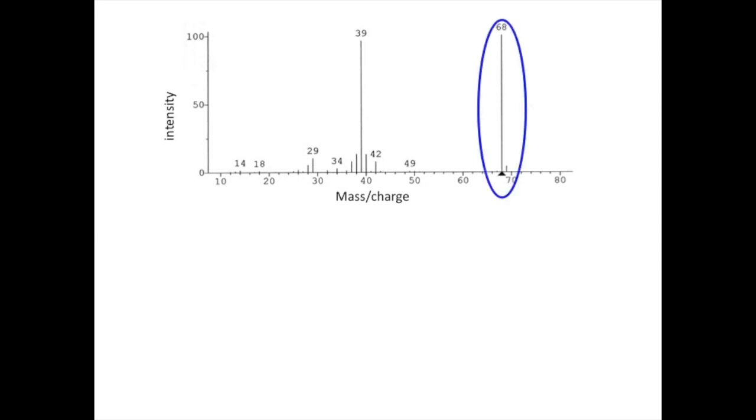Start by identifying the molecular ion. If it is present, it should be in the cluster of ions at the high mass end of the scale. Let's assume that the tallest peak in this cluster is the molecular ion. Note, that is not always the case. With the molecular ion at 68, the peak at 69 must be the M plus 1 ion. Let's use their intensities to calculate the number of carbon atoms.